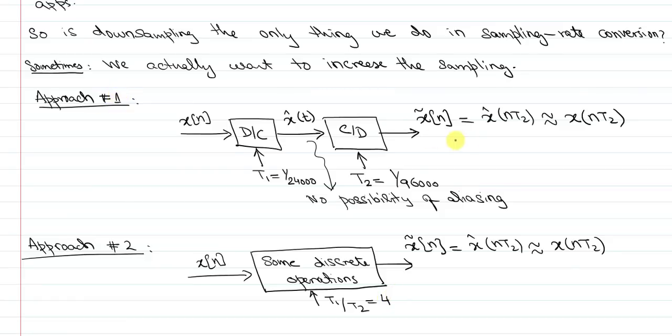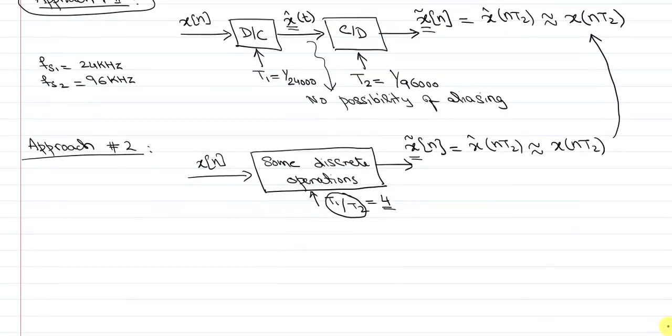In this case, what I need to input to the system is the ratio of the two sampling times, which in this case is four. So the goal in this problem was I am given sampling frequency 24 kilohertz. I need to actually go to new sampling frequency 96 kilohertz. Approach number one, which is infeasible, is that I reconstruct the signal and then I resample it in analog domain. Approach number two, which is what sampling rate conversion is, is that I actually just input the ratio of the two things that I am interested in. So in this case, the ratio is four. And I do some discrete operations to get back a sequence that would have been the same that I would have gotten using approach one.